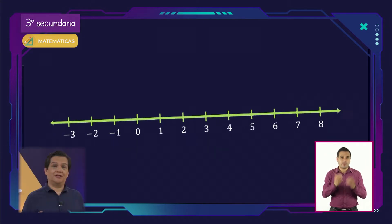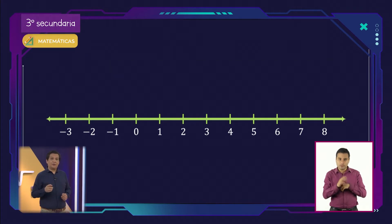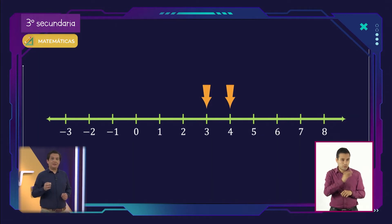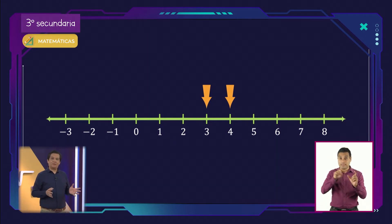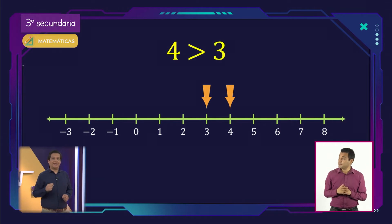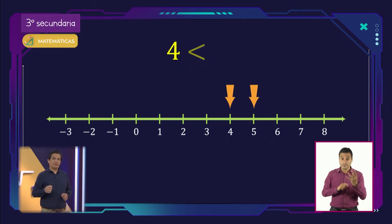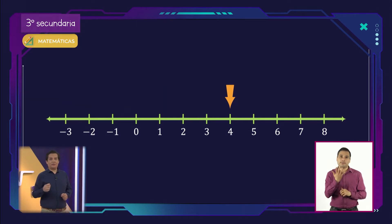El siguiente gran salto en la comparación de cantidades vino con la recta numérica, usada para representar a los números como puntos. La comparación de números en la recta numérica permite saber la tricotomía correcta, es decir, si un número se encuentra a la derecha de otro, este es mayor y la relación entre ambos se representa con el símbolo mayor que. Así, el número 4 es mayor que 3 al encontrarse a la derecha del mismo. También se puede decir que el número 4 se ubica a la izquierda del número 5, por lo que es menor, y la relación se representa con el símbolo de menor que.